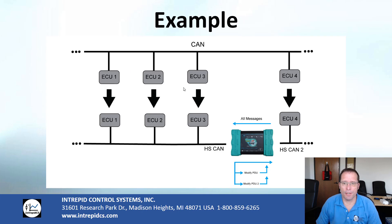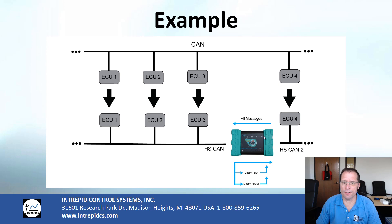In this example, we're going to use a CAN network with four ECUs, and we're going to spoof or inject faults on two PDUs for ECU4. To do this, we have to break the CAN network and insert hardware.